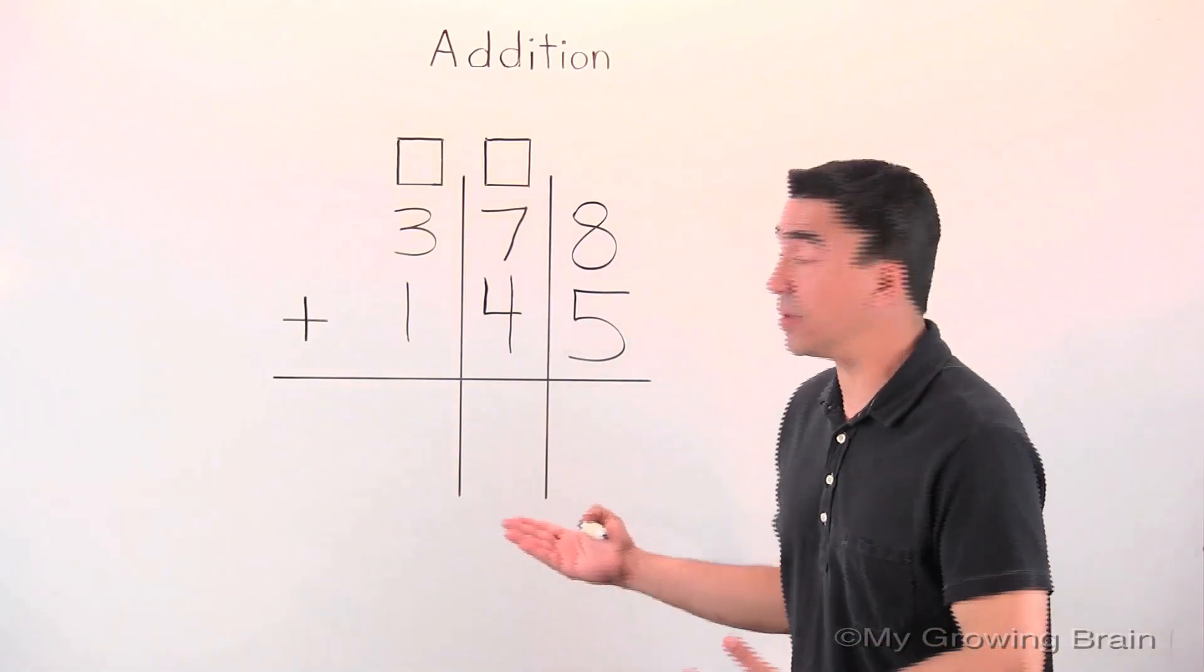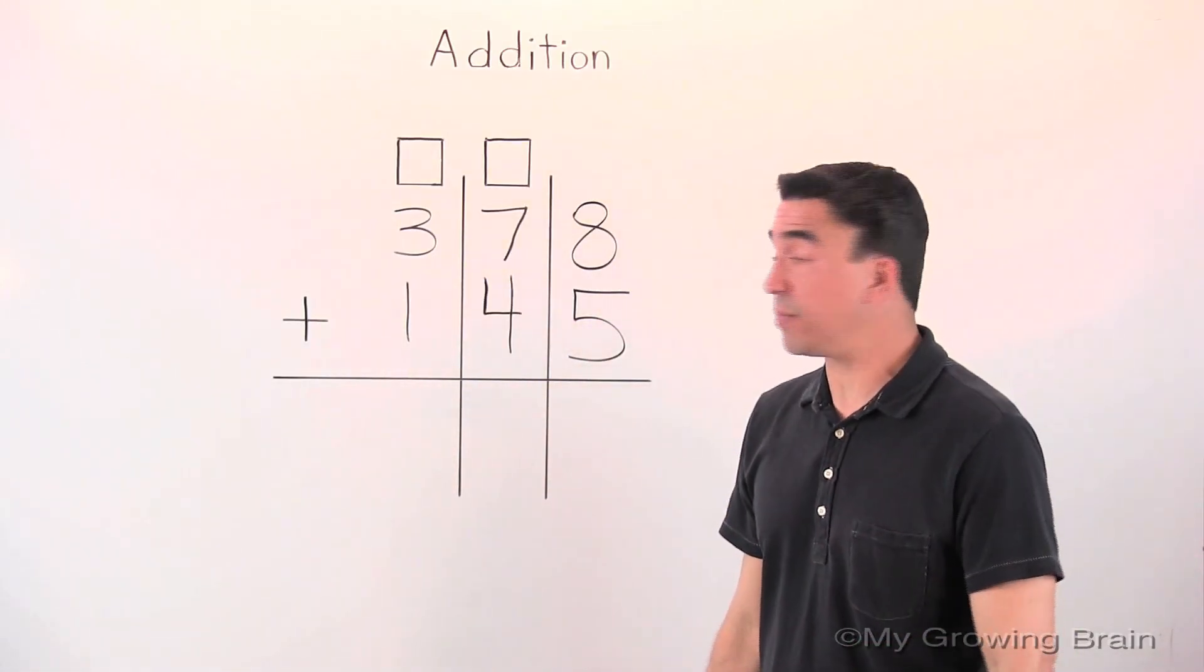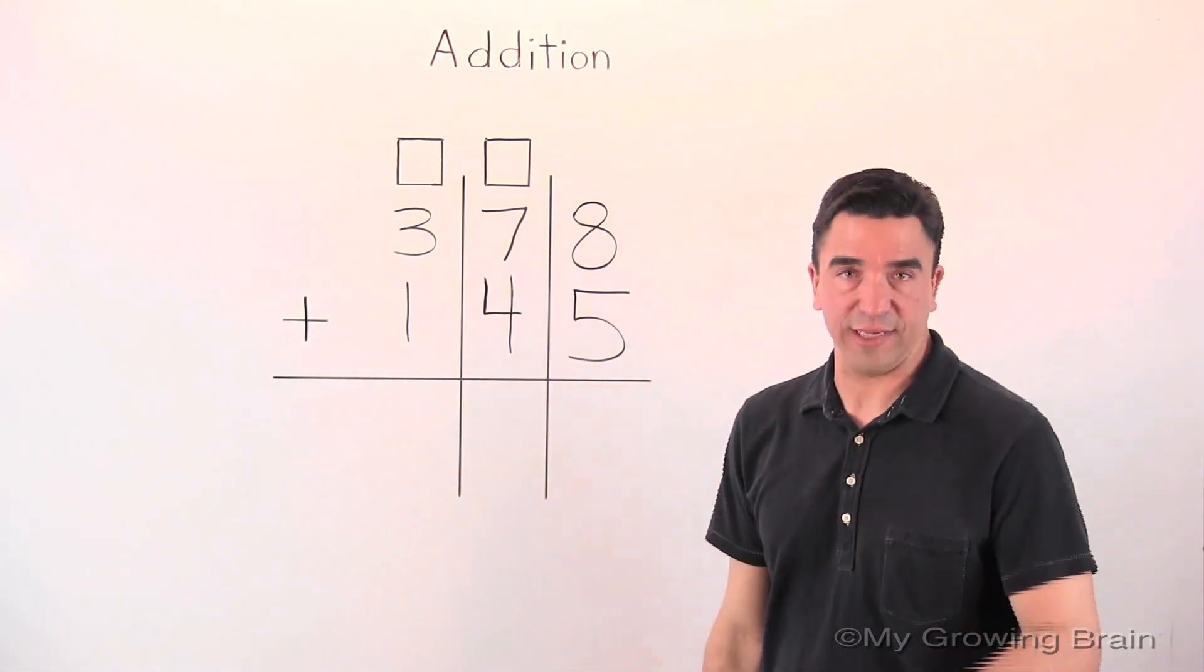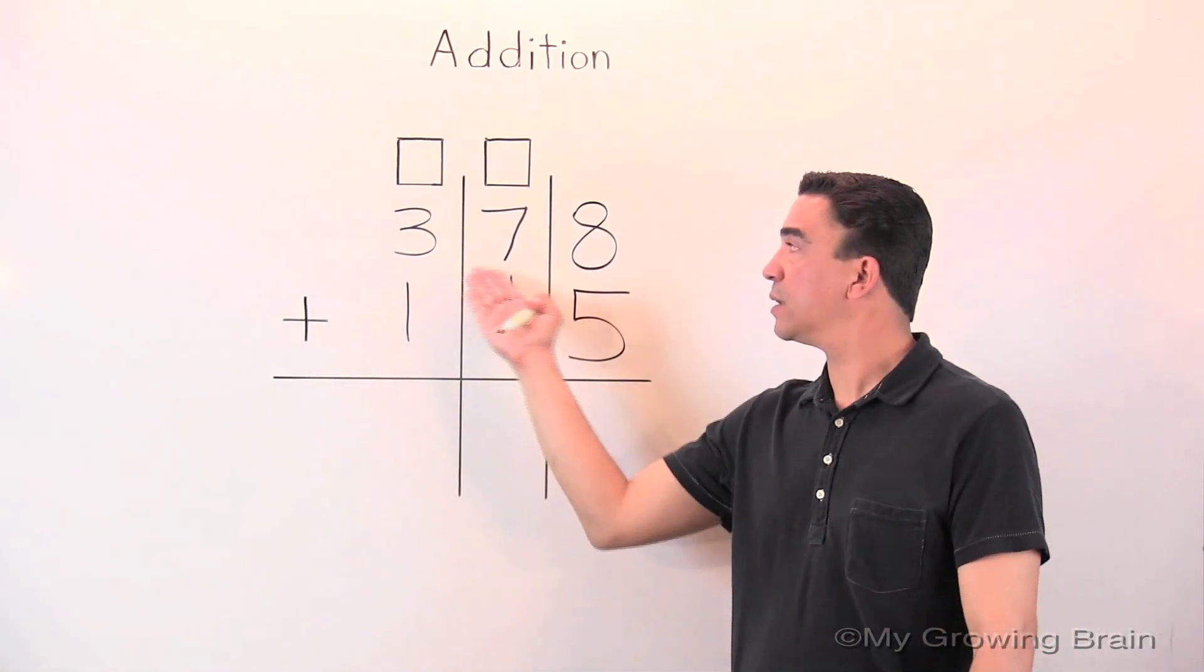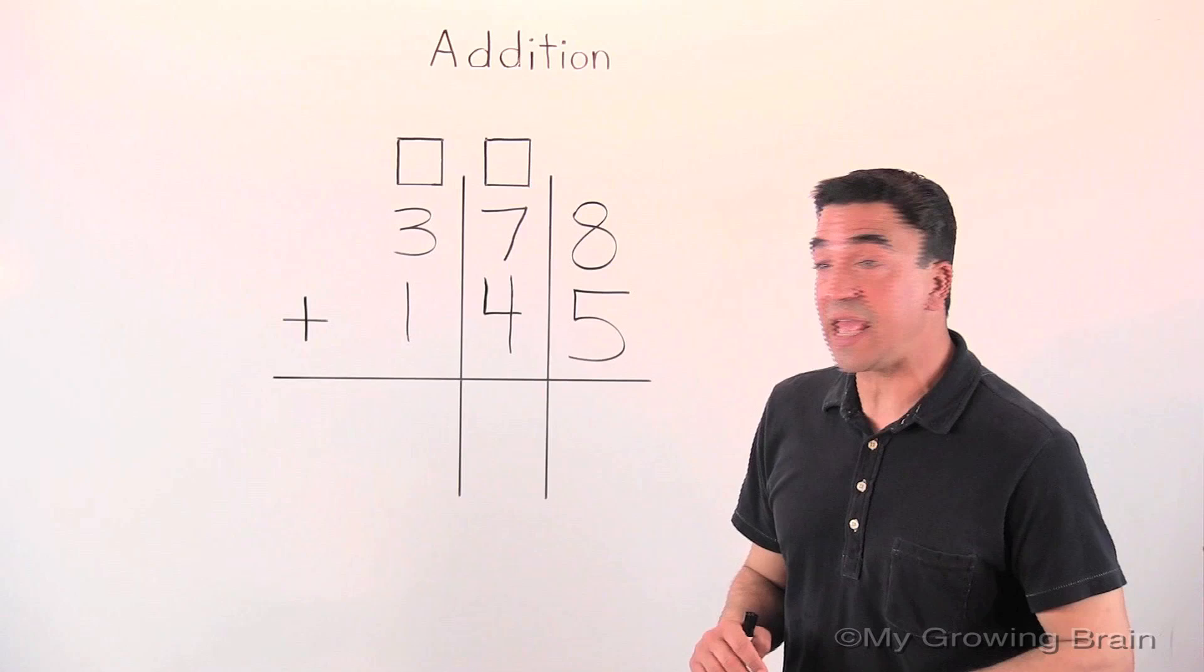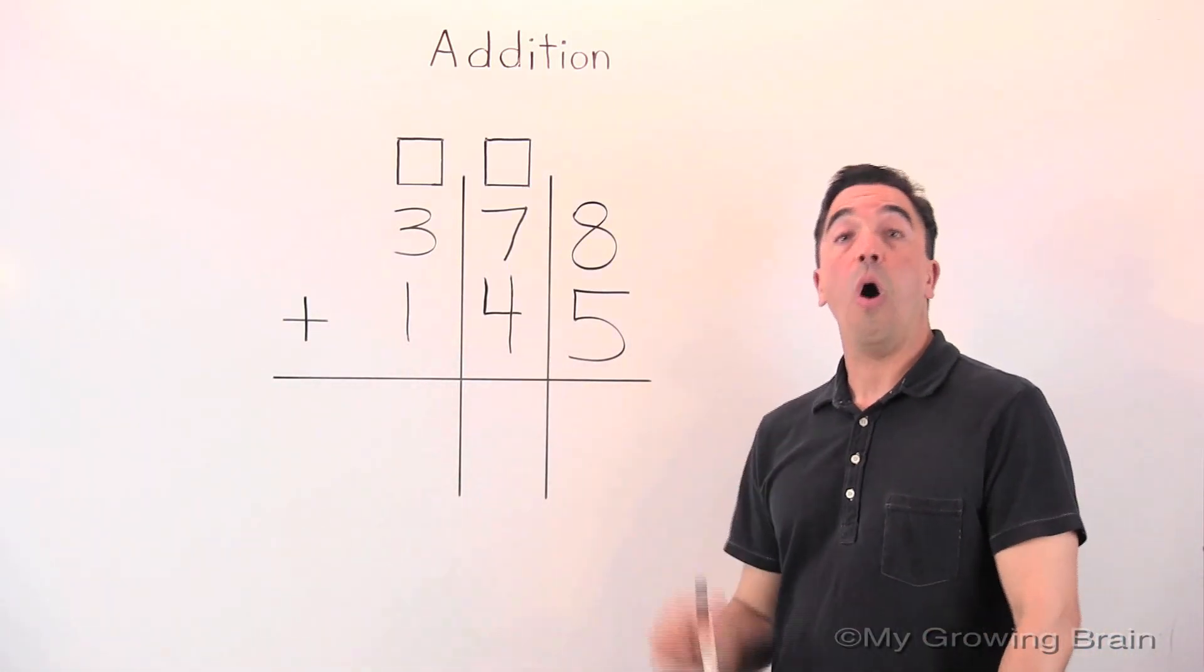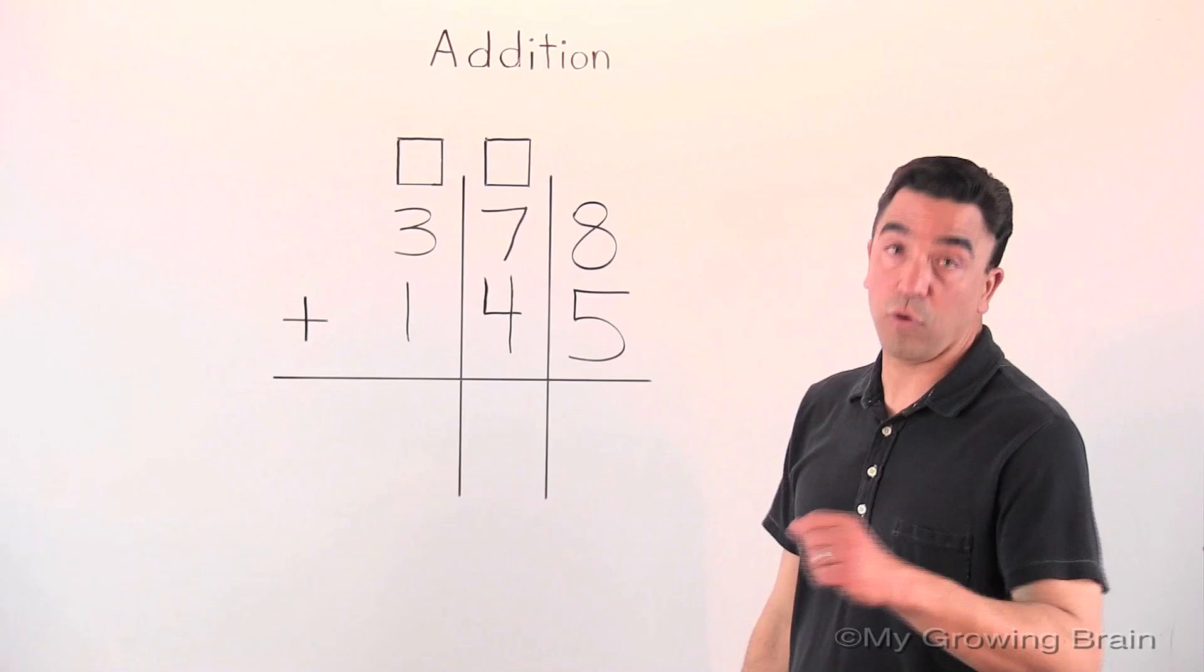Here's our problem. A three-digit number plus a three-digit number: 378 plus 145.